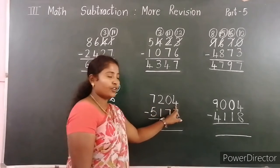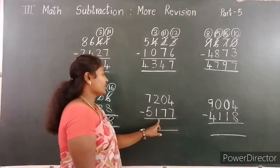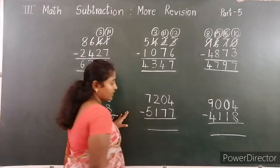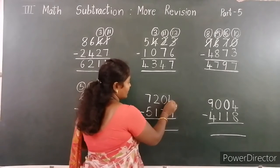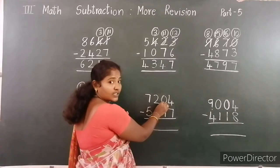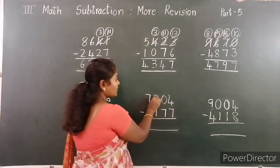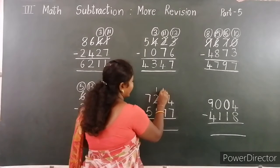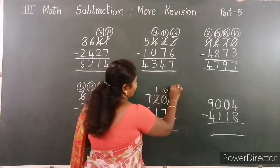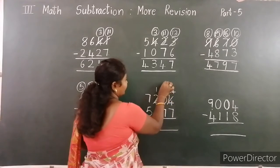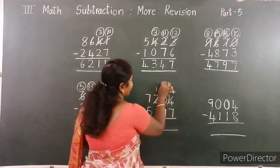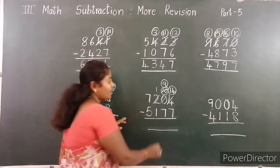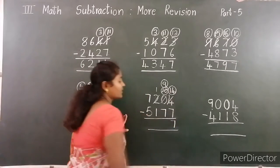Go to next example: 7,204 minus 5,177. Start from the ones place. 4 minus 7 — 4 is smaller than 7, so borrow from the tens place. Here 0, so ask the hundreds place. Now borrow 10, so 14, remainder is 9. 14 minus 7 — the difference is 7.